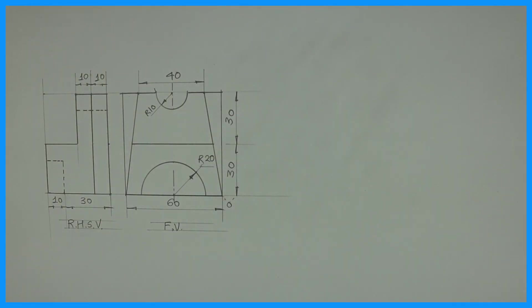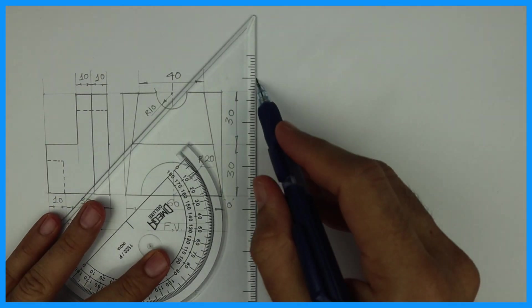Welcome to technical drawing. Today we are going to draw this Samin Oblique. If you see, they have given front view and right hand side view. See this length is 60 and width is 40.